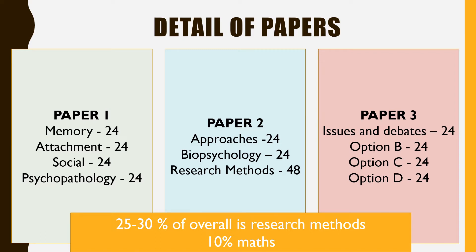AQA have said that the proportion of research methods is going to be about 25 to 30 percent of your overall grade. Across the three papers there are 288 marks in total, which means you're looking at about 86 marks of research methods. There are 48 marks in paper two, so across papers one, two and three there will be an additional 38 marks of research methods. Don't be fooled into thinking research methods questions can't appear in approaches and biopsych in paper two — they can. Within research methods, 10 percent of those marks are going to be maths-based, but the maths content is around higher-level GCSE, so hopefully you won't have to learn too many new things.